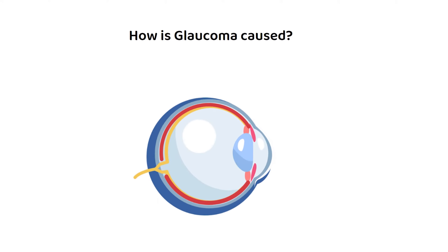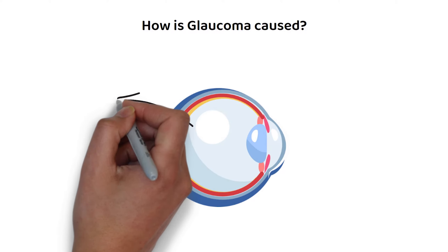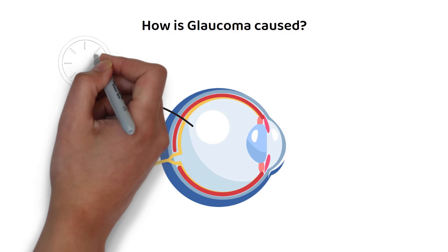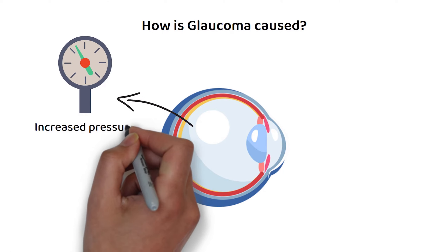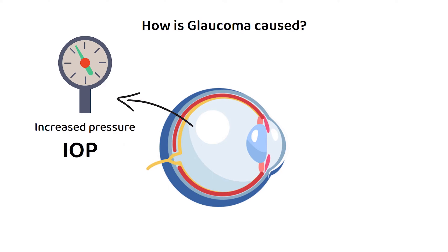Glaucoma is typically associated with increased pressure within the eye, known as intraocular pressure, although some forms of the disease can occur without elevated IOP.